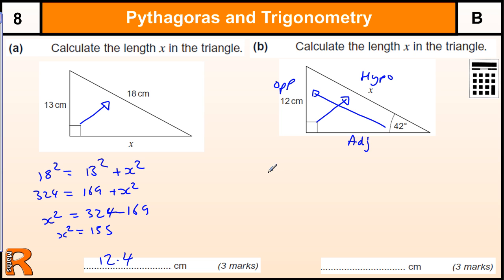Now also we need to know our trigonometric formulas. So the SOHCAHTOA, sine, opposite over hypotenuse, cos, adjacent over hypotenuse, tan, opposite over adjacent, SOHCAHTOA.